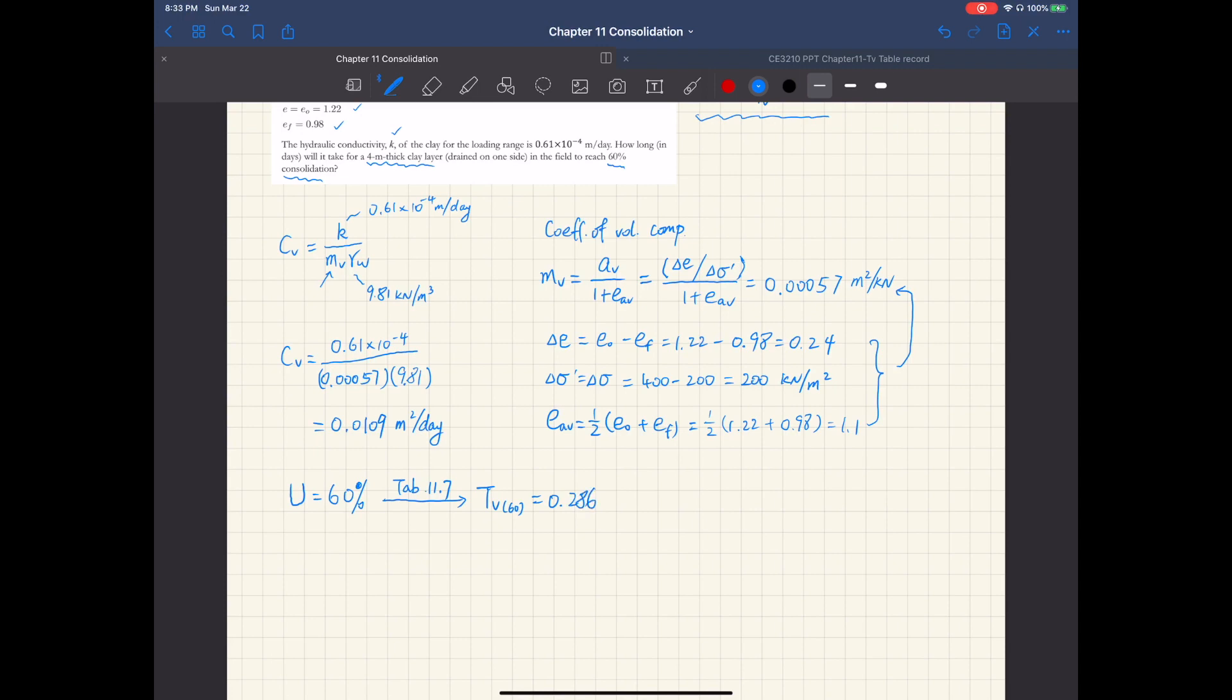And recall the definition of the time factor here, T sub V is coefficient of consolidation C sub V times time T over the square of maximum drainage distance H sub DR squared. So from this definition, we can calculate time T corresponding to 60% degree of consolidation.